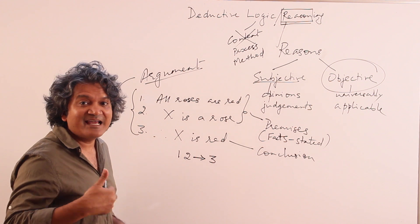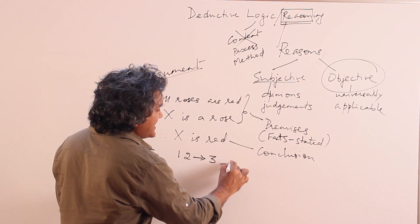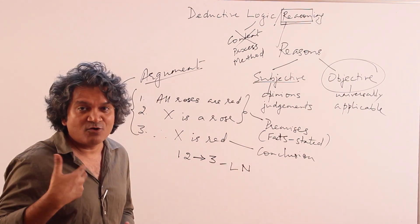Three necessarily follows. It is necessarily true because of this. So we can call it as logically necessary, LN. LN means logically necessary. So this argument is logically necessary.